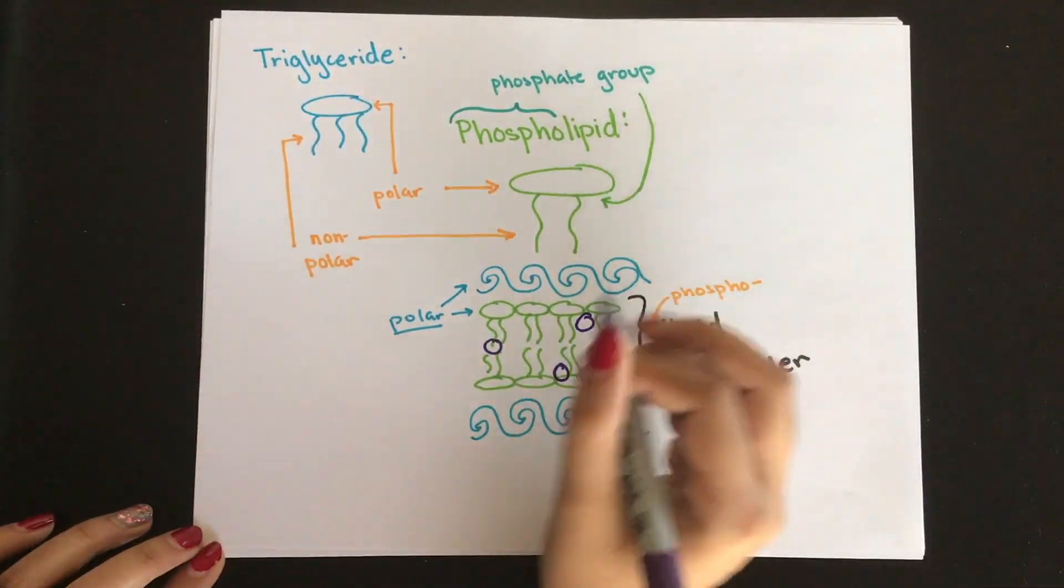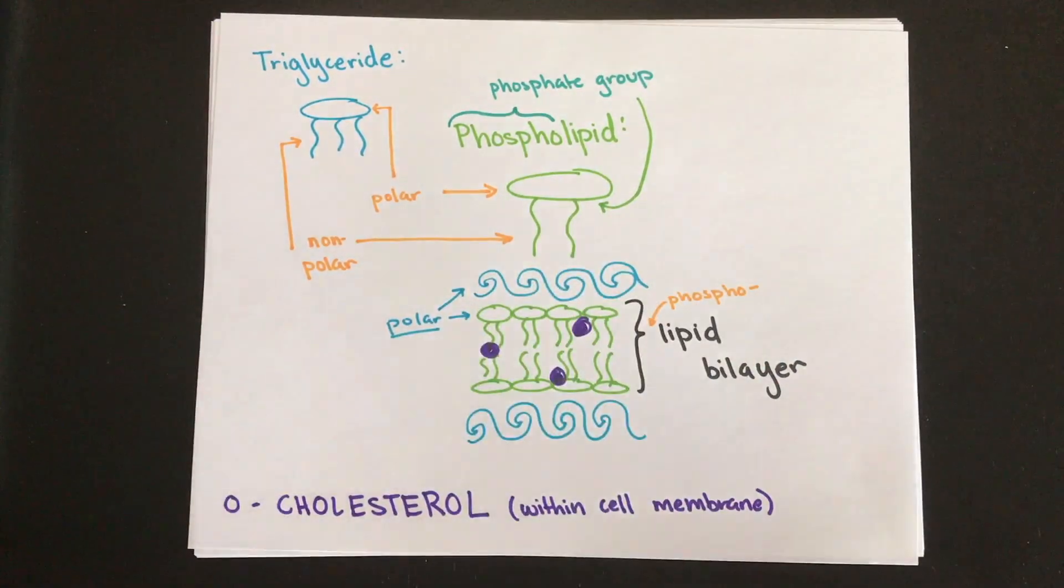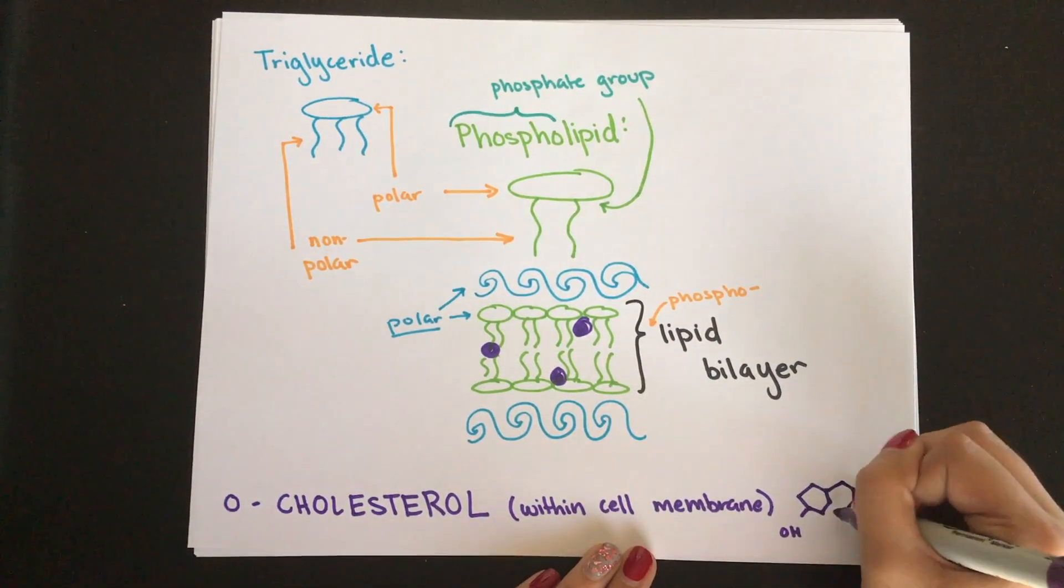The next lipid we're going to talk about is cholesterol, which is made up of hydrocarbon rings and is found in the cell membrane. All steroid hormones of the body are derived from cholesterol.